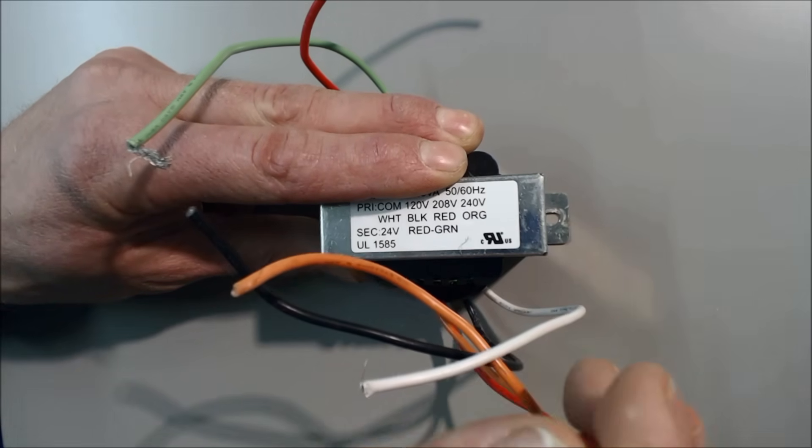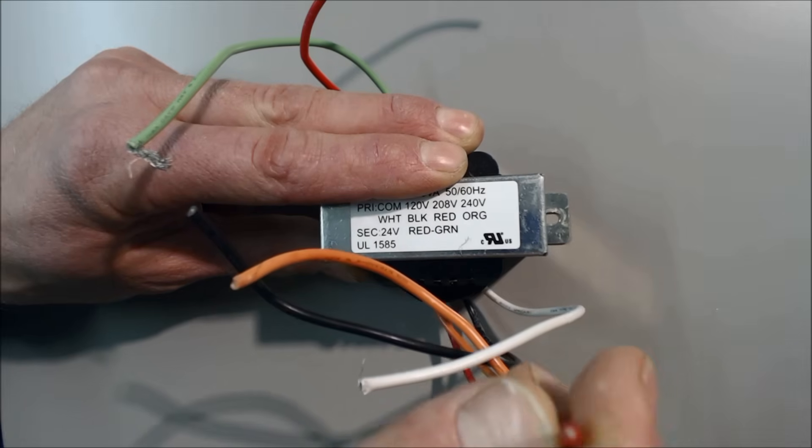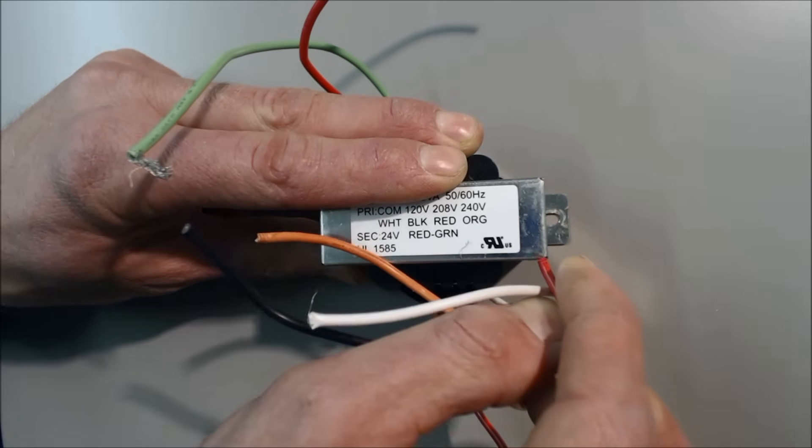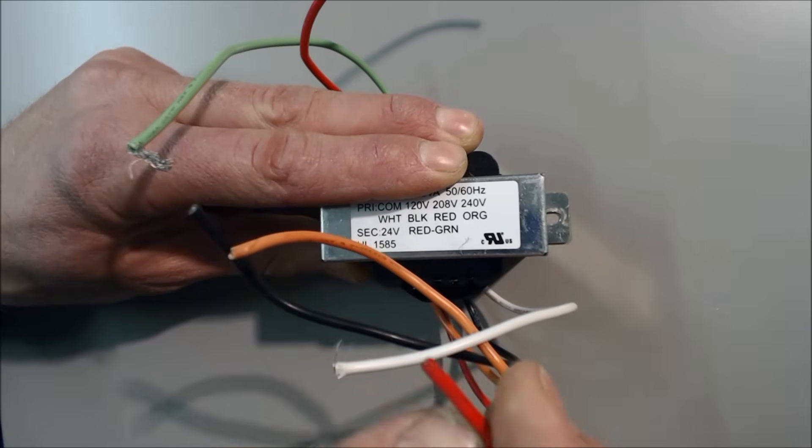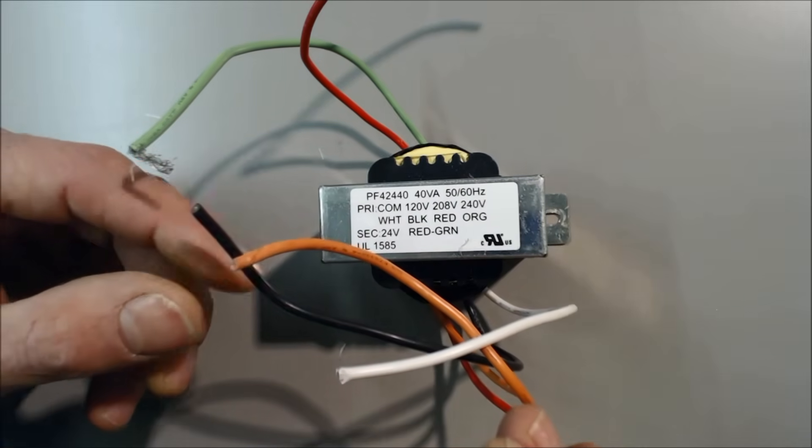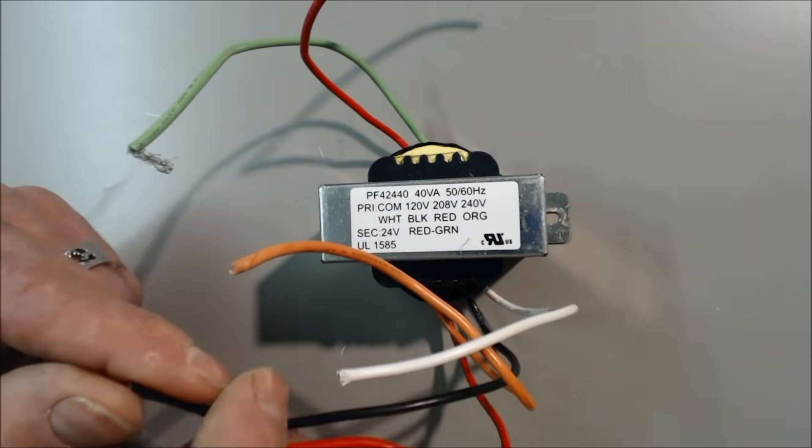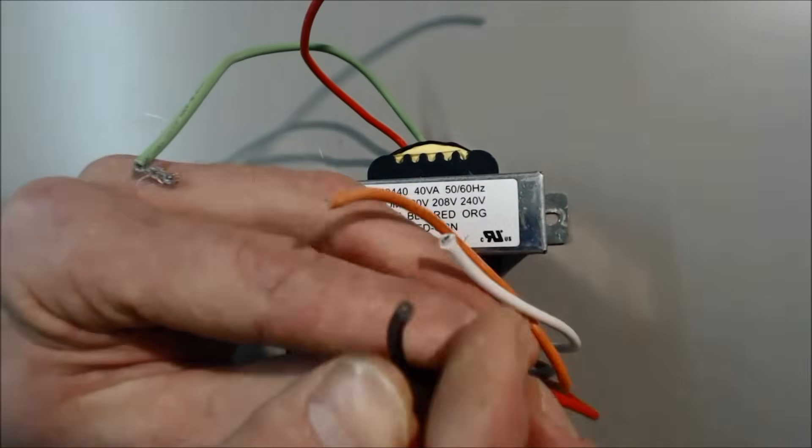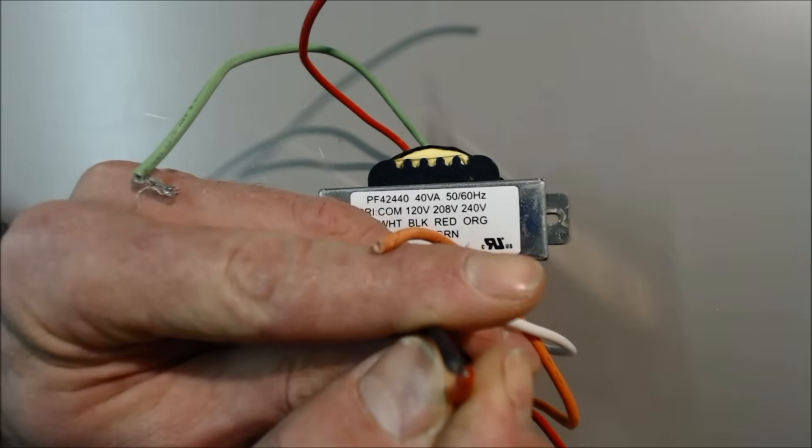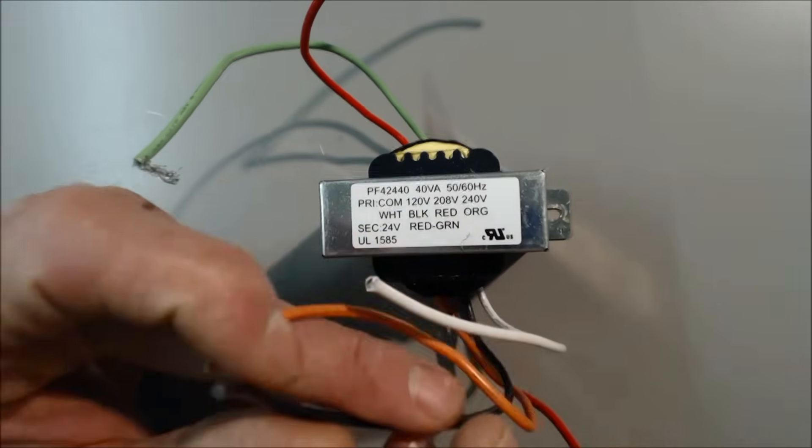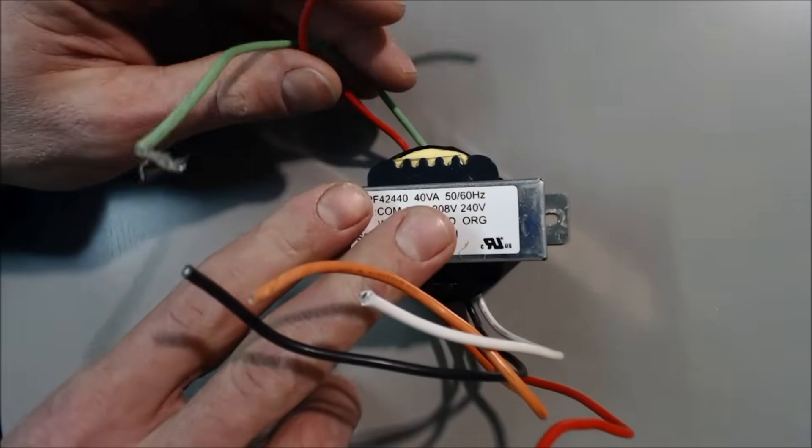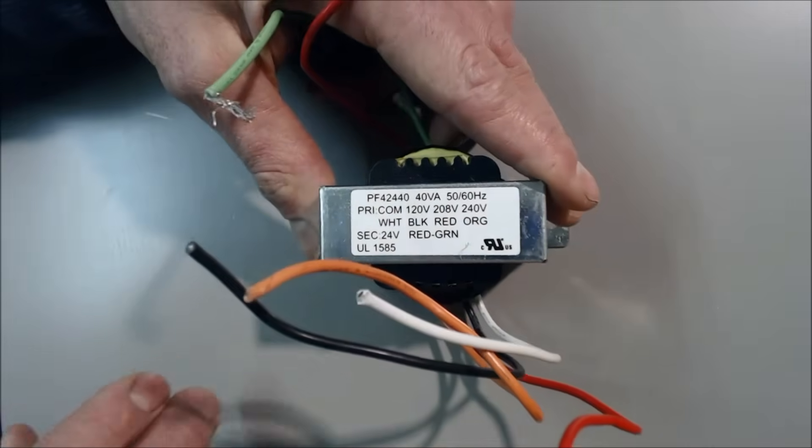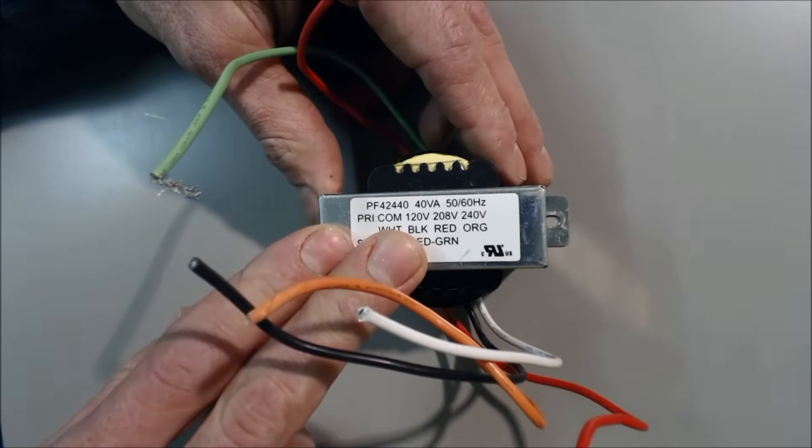It's very important to make sure that these are wire nutted off or somehow make sure that these do not touch any ground or the other wires as well. You also cannot, say you're going to use this for a 240 volt system, you would use these two wires right here. Make sure you do not wire nut these together. Make sure they're wire nutted separately.